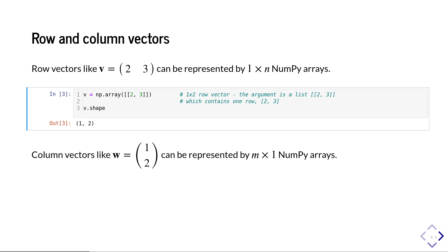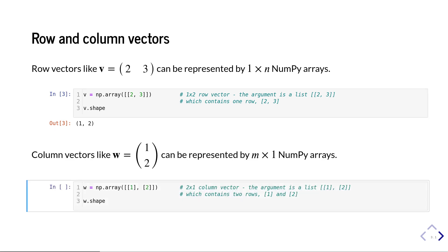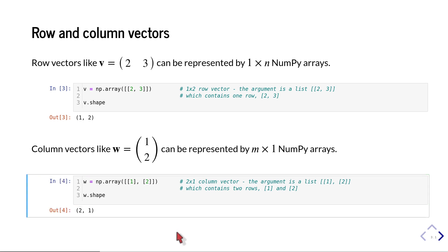For a column vector of height 2, we represent it as a 2 by 1 NumPy array. To create it, we give np.array a list containing the rows of the column vector — so a list with two elements, where the first element is the list [1] and the second is the list [2]. When we check the shape, we get (2, 1), confirming we've successfully made a 2 by 1 NumPy array.